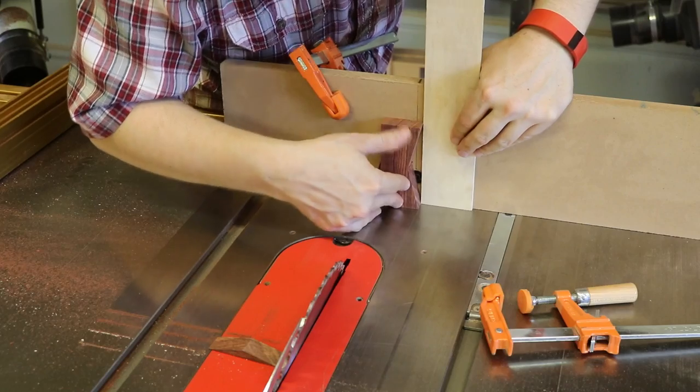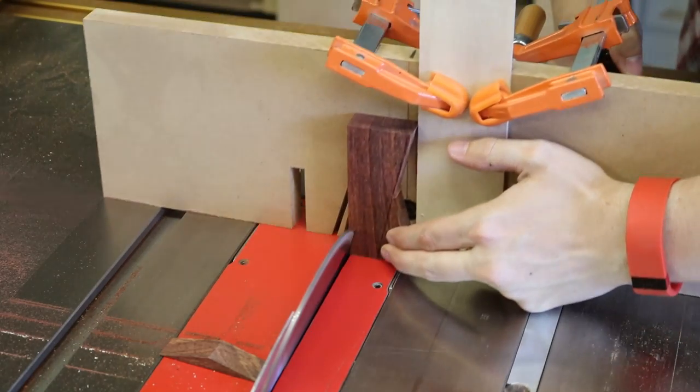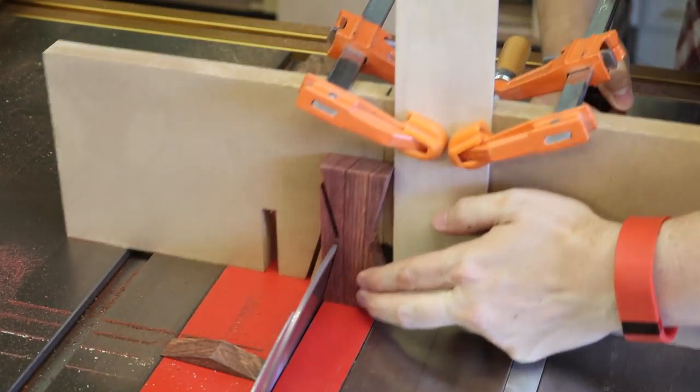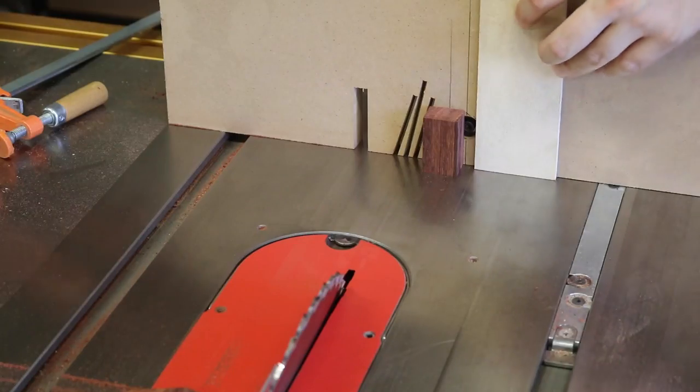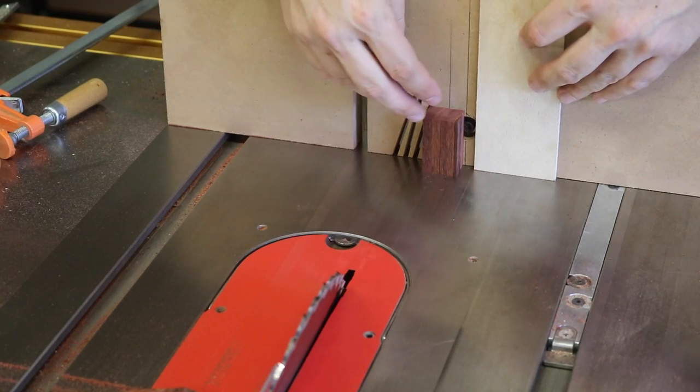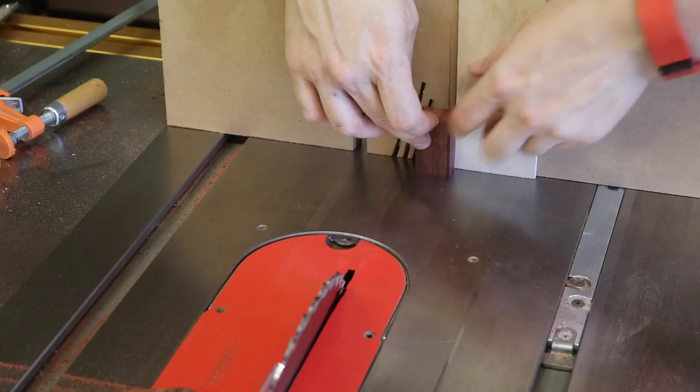Now, readjust your fence so when you come back at the piece, you are just nipping off the edge of your piece to create a perfect butterfly key. Now, for this little one-inch guy, the setup is pretty much the same, except when we cut it, we're going to do something a little bit different.